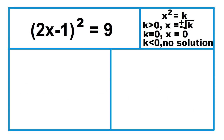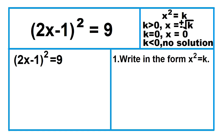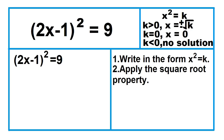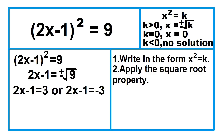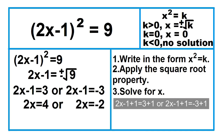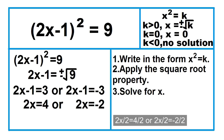Another example. The equation is already in the form x squared equals k, where k is greater than 0, meaning there are two solutions. 2x minus 1 equals positive square root of 9, or 2x minus 1 equals negative square root of 9. Separate the plus or minus into two equations and simplify each individually. 2x minus 1 equals 3, or 2x minus 1 equals negative 3. Add 1 to both sides: 2x equals 4 or 2x equals negative 2. Divide both sides by 2: x equals 2 or x equals negative 1.